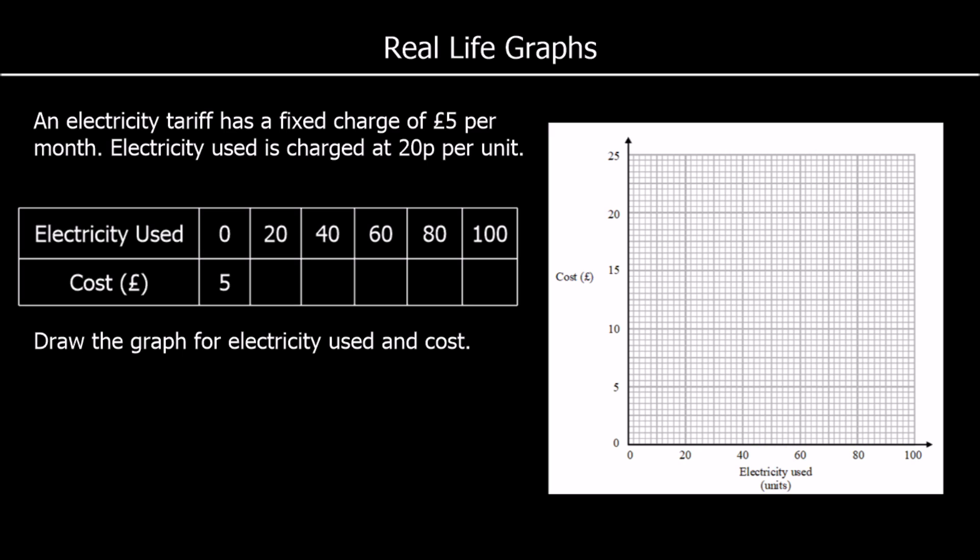So for 20 units, it's going to be £5 plus 20 lots of 20p. So what's 20 times 20p? 20 lots of 20p. So 10 lots of 20p is £2. Double that for 20 lots, that's £4. So it's £5 plus £4, which is £9.